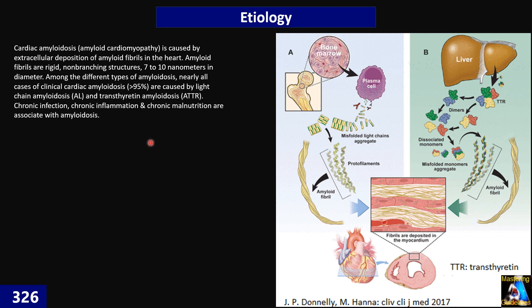Two decades ago, this disease was considered rare, but with increasing knowledge and awareness, the incidence and prevalence of amyloidosis is no longer rare. Just in 2016, based on study data, almost 2,500 to 5,000 cases every year are diagnosed in the United States.